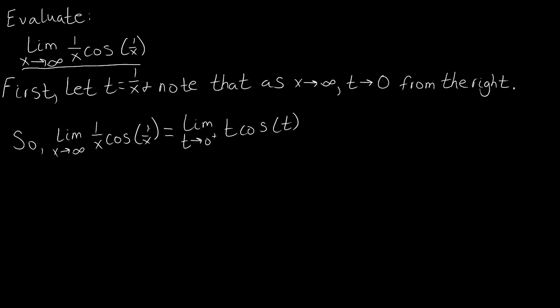So we let t equal 1 over x, right? So anywhere we saw 1 over x in our original function, we went ahead and replaced it with t. That's fairly straightforward.